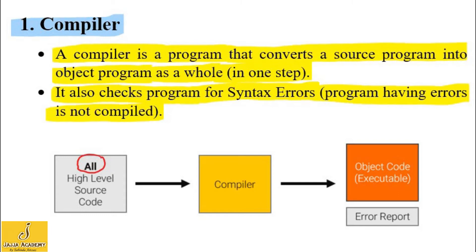If the source program contains errors, an error report is generated and the compilation process is stopped. A program containing errors cannot be compiled unless the errors are removed. This is the working of a compiler.